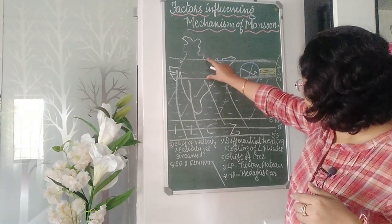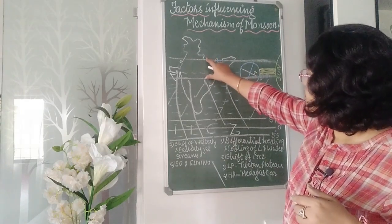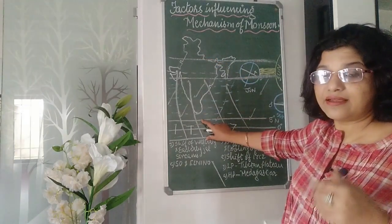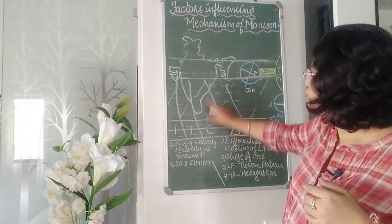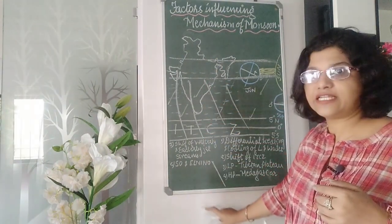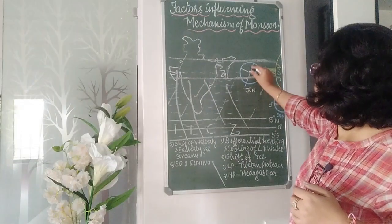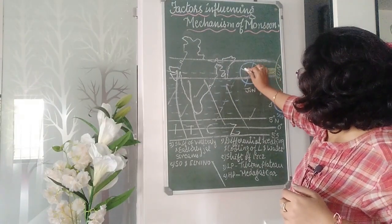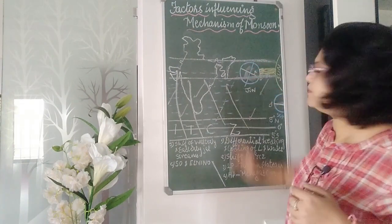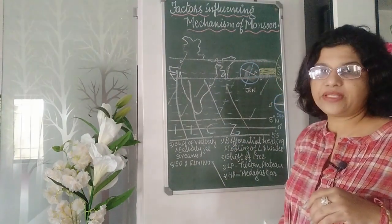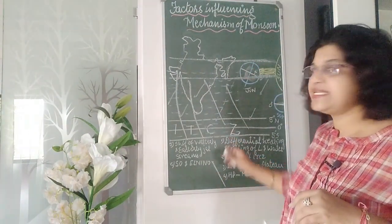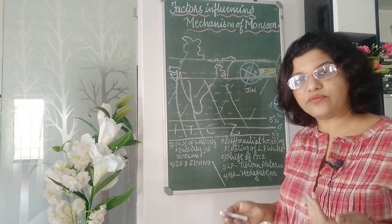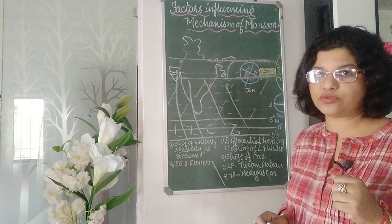By September, this zone shifts back towards the equator, and by December it shifts to the southern hemisphere. This seasonal shift of the ITCZ heat belt keeps taking place between the northern and the southern hemisphere as the Earth revolves around the sun. The winds converge from both zones, and this is the Intertropical Convergence Zone.